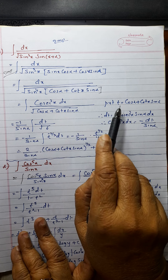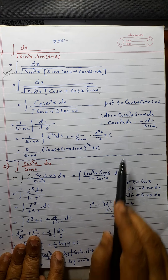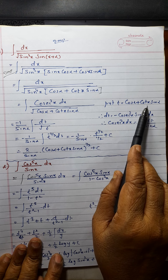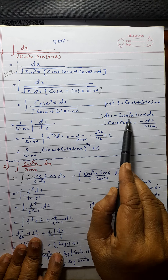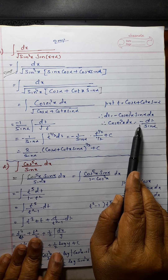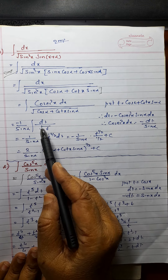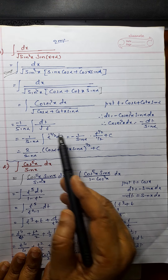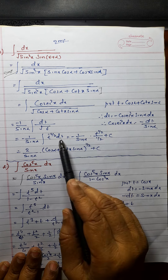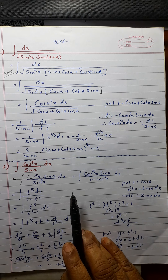Put t equal to whatever is inside the root. Remember, we are finding the derivative with respect to x, so alpha is constant — derivative of cos alpha will be 0. And sin alpha is constant as it is. Derivative of cot x is minus cosec square x dx. So cosec square x dx equals dt divided by sin alpha with a negative sign. This will become minus 1 upon sin alpha times dt, and dt upon root t, which is t raised to minus half. Integration of t raised to minus half is t raised to half upon half plus c. Substitute back the value of t — this will be your answer.